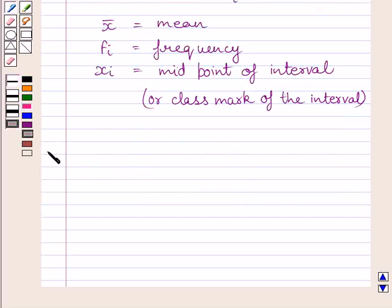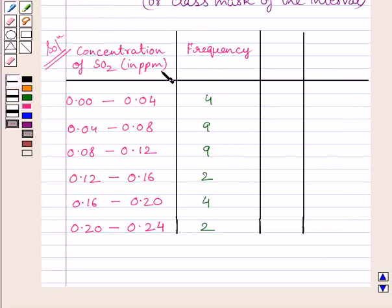Let us now start with the solution. First of all, we will rewrite the data given in the question. We are given concentration of sulfur dioxide in parts per million and frequency. We denote frequency by fi.